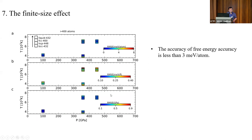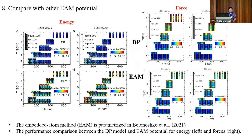Before applying our potentials to very large systems, we test finite size effects by running a large simulation cell with more than 400 atoms. We do not test all phases at all conditions — only selected conditions. The performance is very consistent with smaller cells, and based on free energy perturbation theory the accuracy of our free energy is less than 3 meV/atom, which is very accurate.